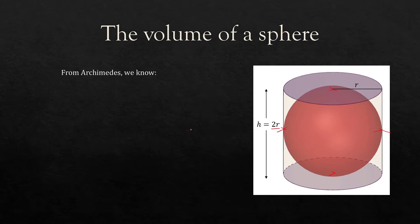From Archimedes we know that the volume of a sphere is equal to two thirds the volume of this particular cylinder here. Obviously you can tell that sphere must be a smaller volume than the cylinder because there's lots of empty space around here.